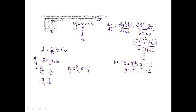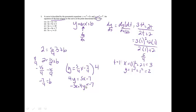I notice that doesn't match any of the answer choices because there are fractions. So I'll multiply everything by 4 to clear the fractions, getting 4y equals 5x minus 7. Subtracting 5x gives negative 5x plus 4y equals negative 7. Multiplying by negative 1 gives 5x minus 4y equals 7, which is choice D.